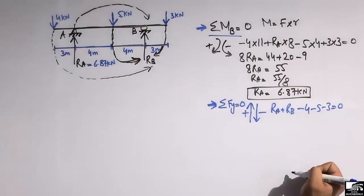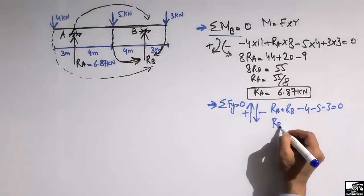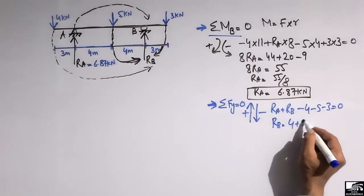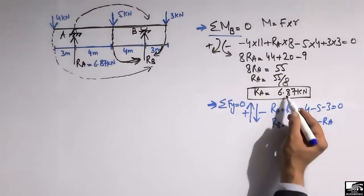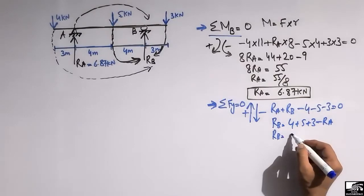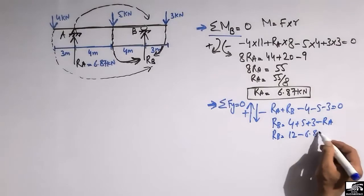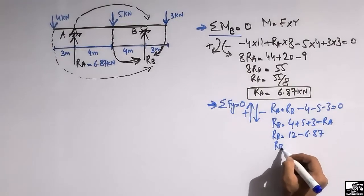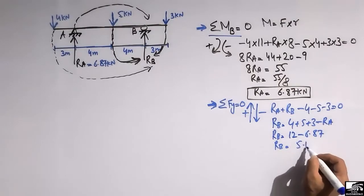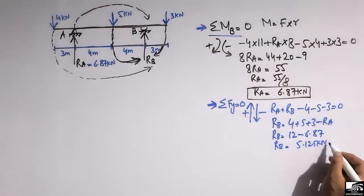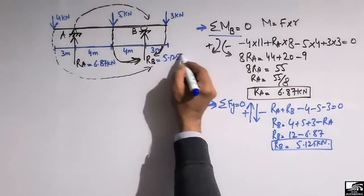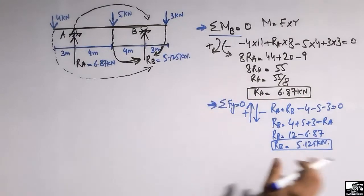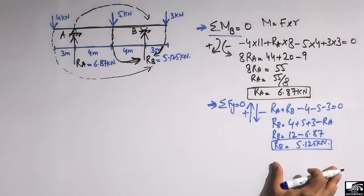Setting the summation of all vertical forces equal to zero, RB equals 4 + 5 + 3 minus RA. Since RA is 6.87, we get 12 − 6.87, giving RB = 5.125 kN. So the support reaction RB is 5.125 kN.